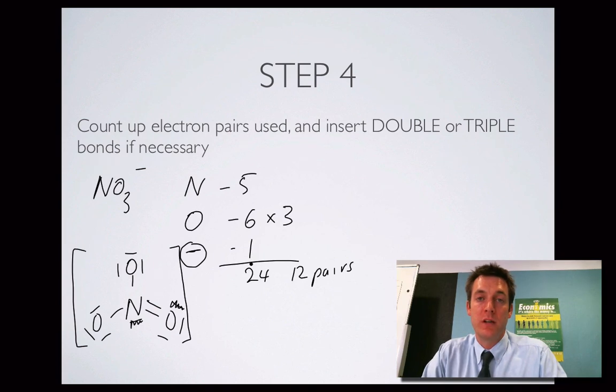The next film, Covalent Electron Dots 2, talks about some slightly more complicated examples where we use compound ions to make actual ionic compounds.